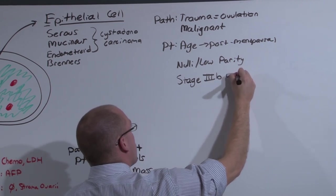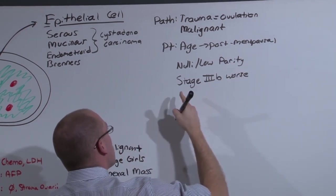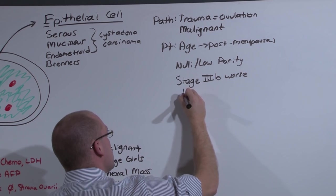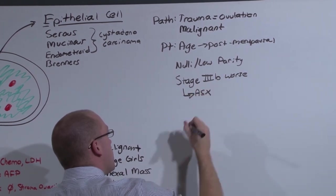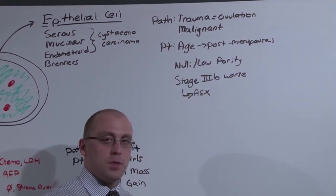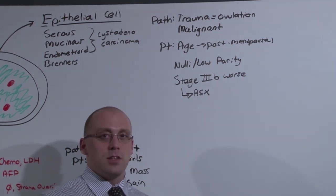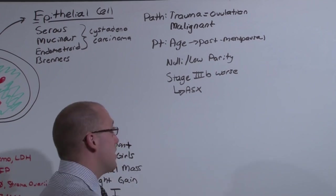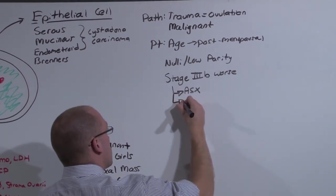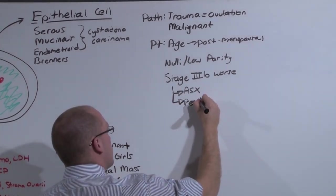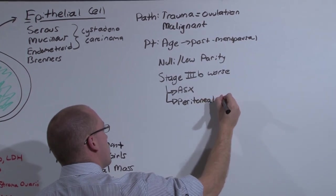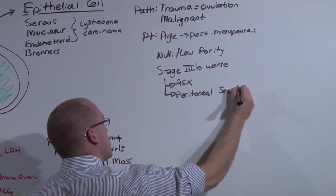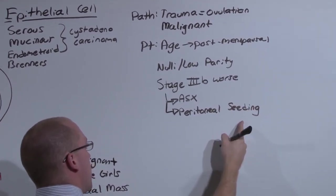Or worse. And the reason for that is that they are generally asymptomatic. The ovaries are in the peritoneum. They are not near anything. So they are not going to abut against something. They are not going to provoke symptoms. And they seed peritoneally, which means they spread quickly to organs around them.